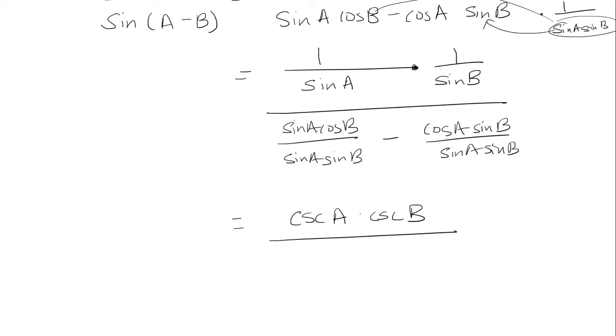Now for the denominator, the sine A's are going to cancel. So you're left with cosine B over sine B, which is cotangent B minus. Now cosine A sine B over sine A sine B have a factor of sine B, so that goes away. I'm left with cosine A over sine A, which is cotangent A.